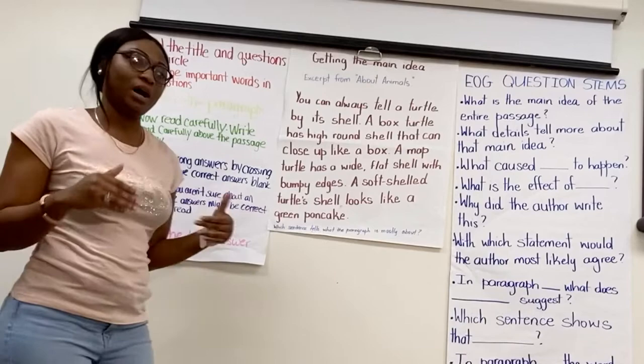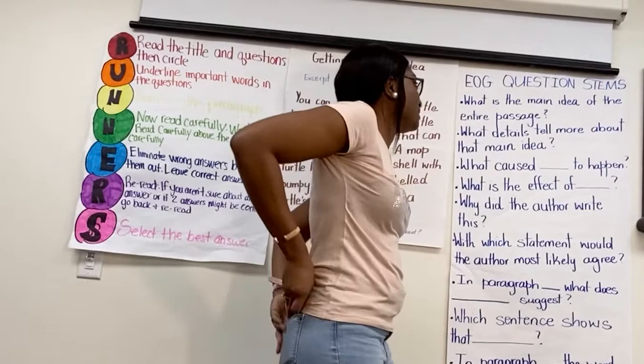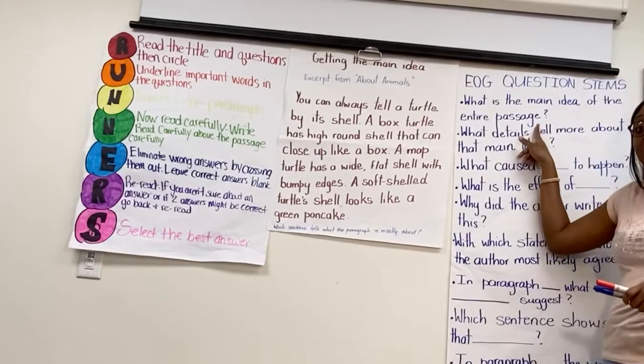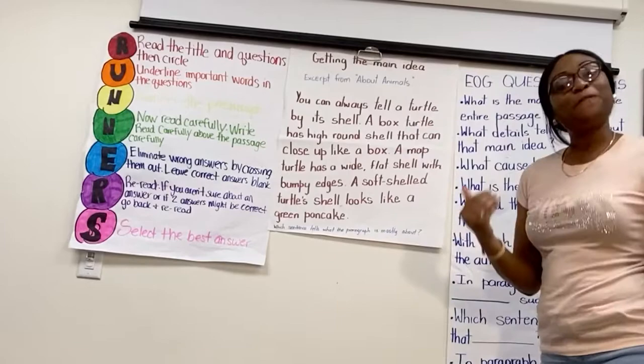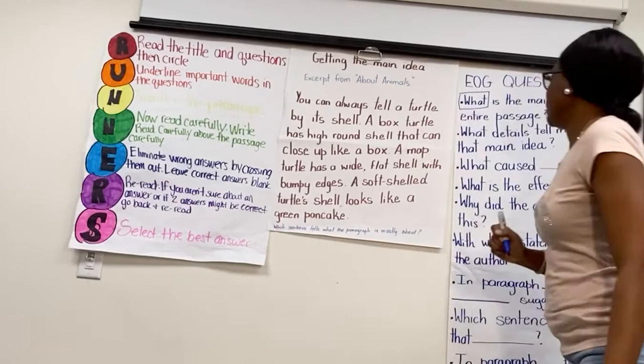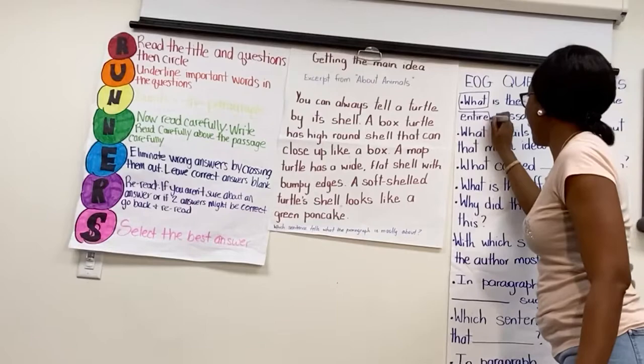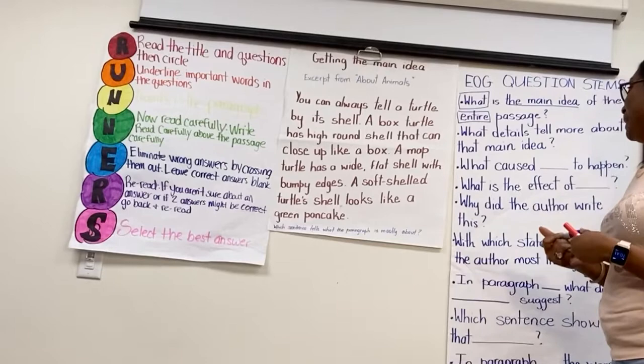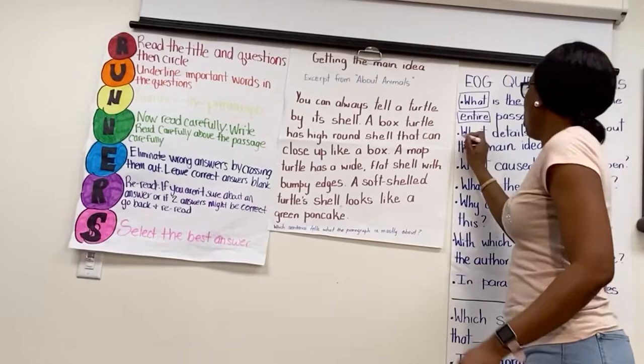U says: underline important words in the questions. Now, I'm here at my questions and it says: what is the main idea of the entire passage? I have to underline important keywords in my question. First, I'm looking at my question word, which is 'what.' They want to know the main idea of the entire passage. Entire means all of the passage.